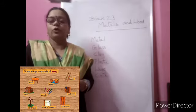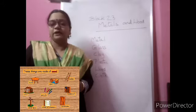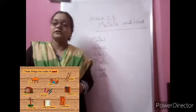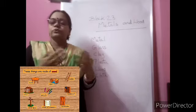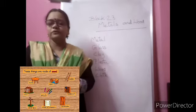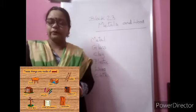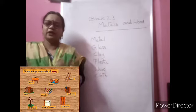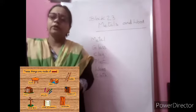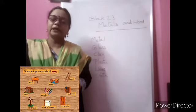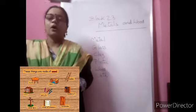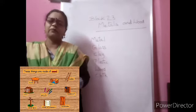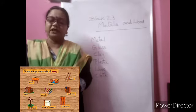Let us discuss some more points and learn better about metals and wood. When you look around you, there are different types of things. When we start naming them, so many we can name, but when you keenly observe, you can understand that all are not made up of the same material. They are made up of different materials.